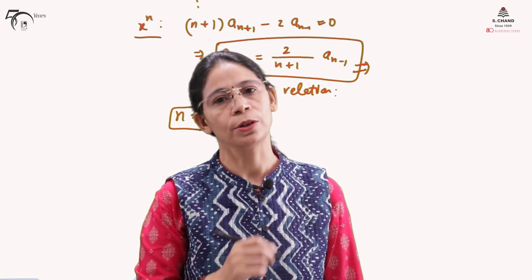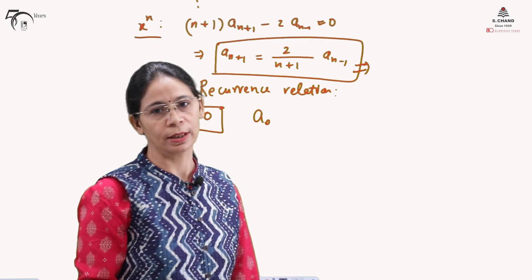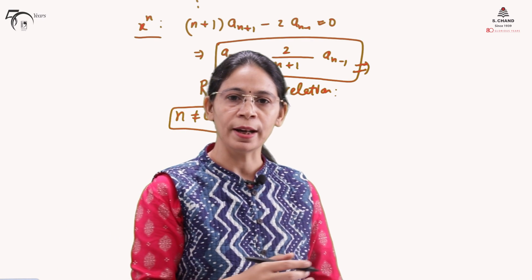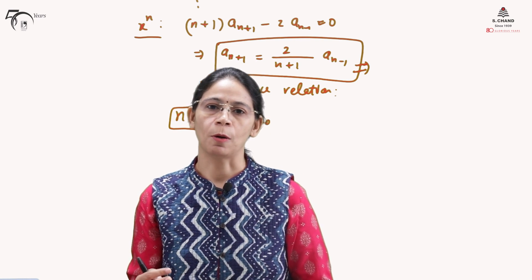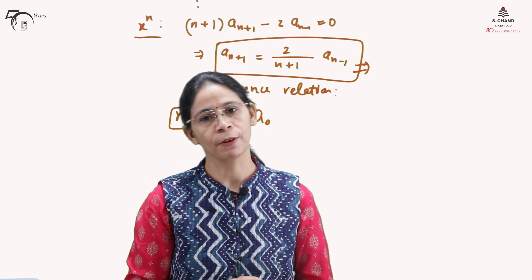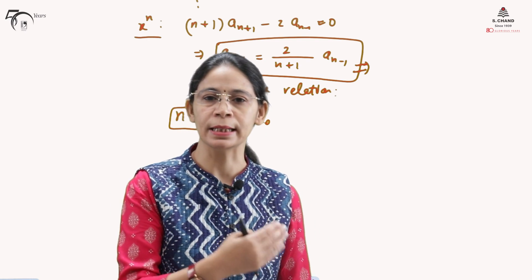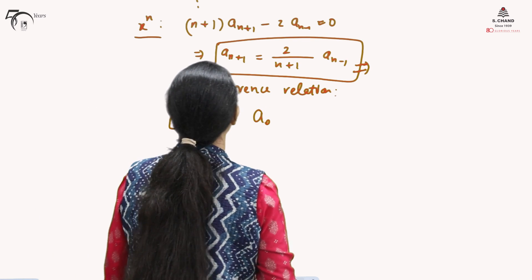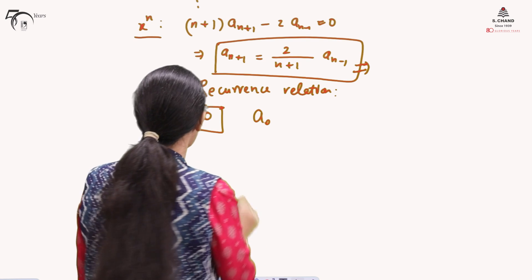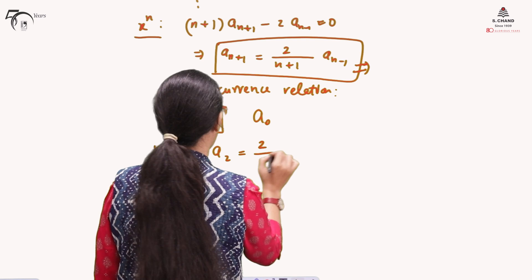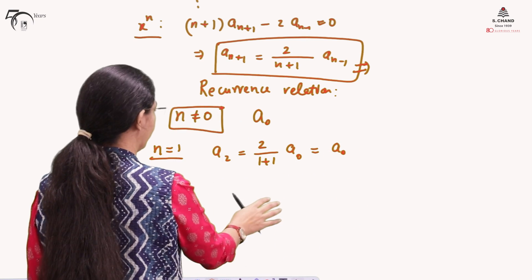The value of a₀ cannot be found using this recurrence relation — a₀ has to be written in terms of itself. The value of a₀ can only be determined if the given differential equation is an initial value problem, i.e., initial conditions are also given. Otherwise it is retained as an arbitrary constant. Substituting n equals 1 gives a₂ equals (2/2)a₀, which equals a₀.